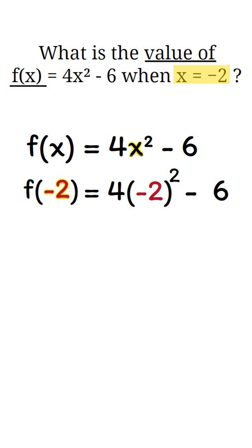Next, we have to simplify the function. We evaluate the exponent. Negative 2 squared is negative 2 times negative 2, which is 4.